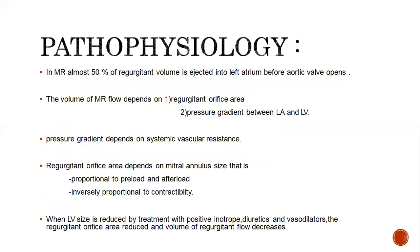In MR, almost 50 percent of the regurgitant volume is ejected into the left atrium before the aortic valve opens. The volume of MR flow depends on the regurgitant orifice area and the pressure gradient between the LA and LV. The larger the regurgitant orifice area, the greater the flow of MR. Greater pressure difference between the LV and LA leads to greater flow. The pressure gradient depends on the systemic vascular resistance.